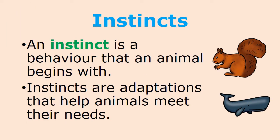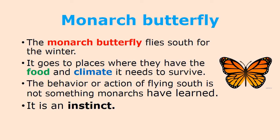Instincts. An instinct is a behavior that an animal begins with. Instincts are adaptations that help animals meet their needs. The monarch butterfly flies south for the winter. It goes to places where they have the food and the climate it needs to survive. The behavior or the action of flying south is not something monarchs have learned. It is an instinct — it is something that they are born with.